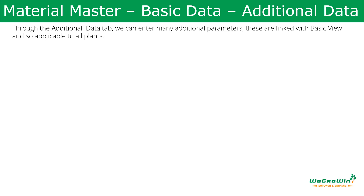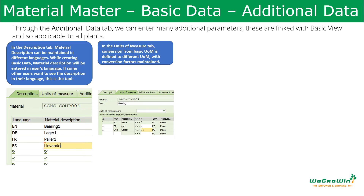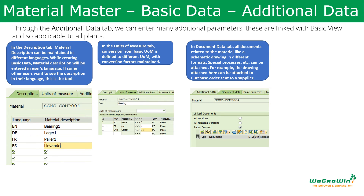Apart from these two views, within the material master you can use the Additional Data tab to enter many additional parameters. These are all linked to the basic views and are common to all plants in the organization. For example, if a company operates in different countries, the material description can be entered in different languages. A material like a bearing defined in English in the basic description can also be given in German, French, or Spanish, so users logging in their own language will see that description. Alternate units of measure can also be defined — for example, 24 pieces in one carton.